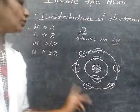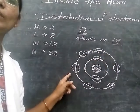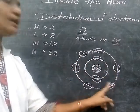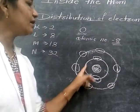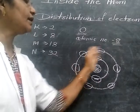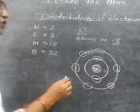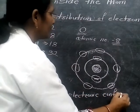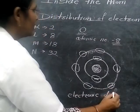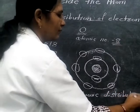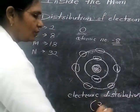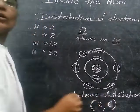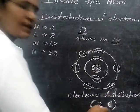Now let us count the total number of electrons revolving around the nucleus: 1, 2, 3, 4, 5, 6, 7, 8. Total number of electrons is 8. In the first shell there are 2 electrons, and in the second shell there are 6 electrons. Therefore, the electronic configuration — or electron distribution — for oxygen is 2, 6.